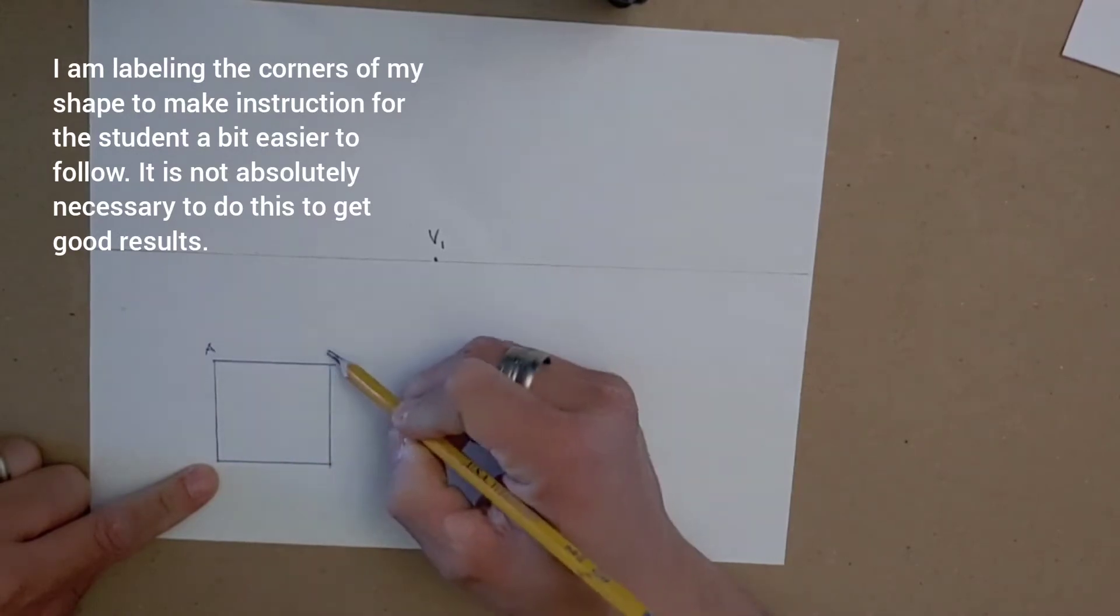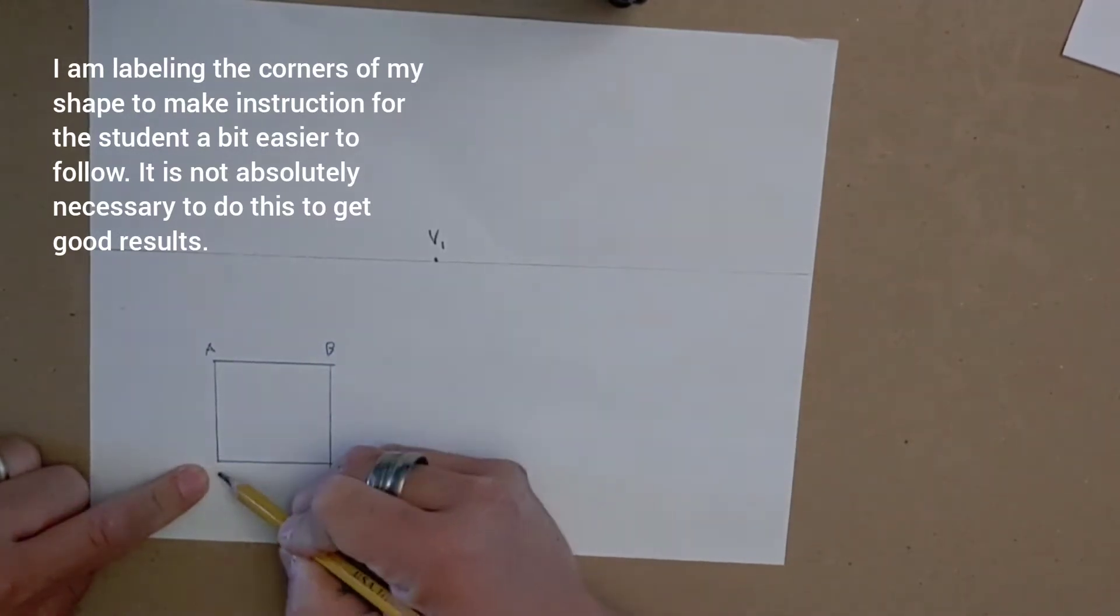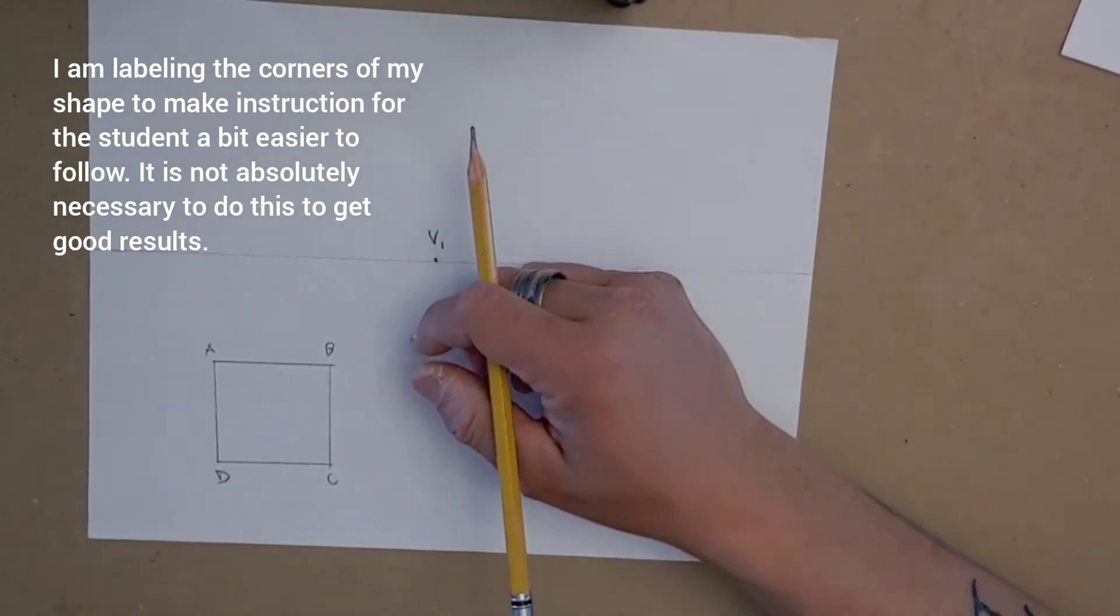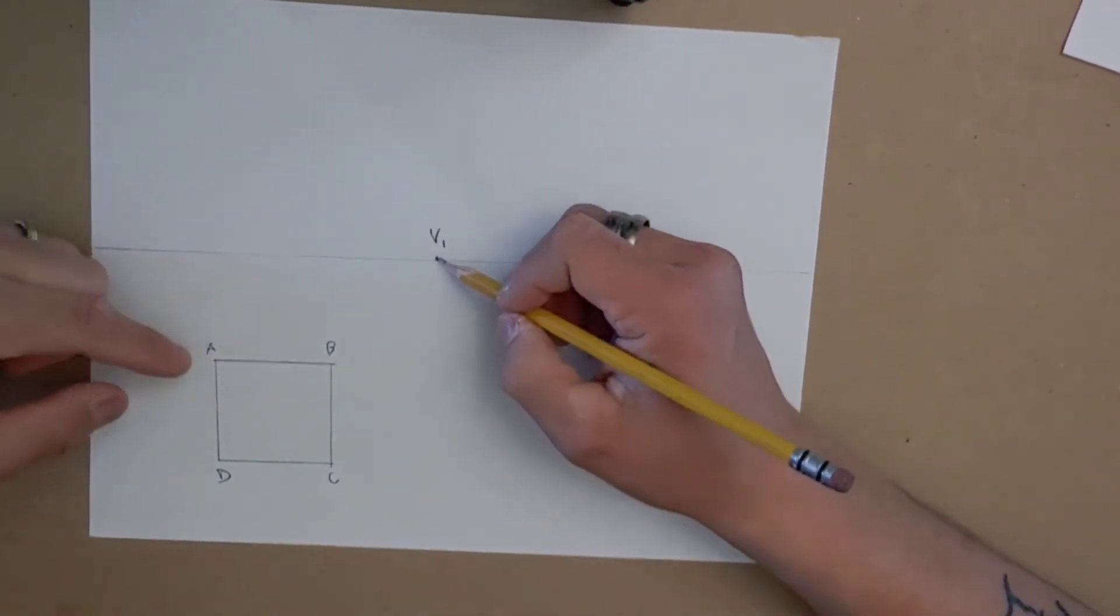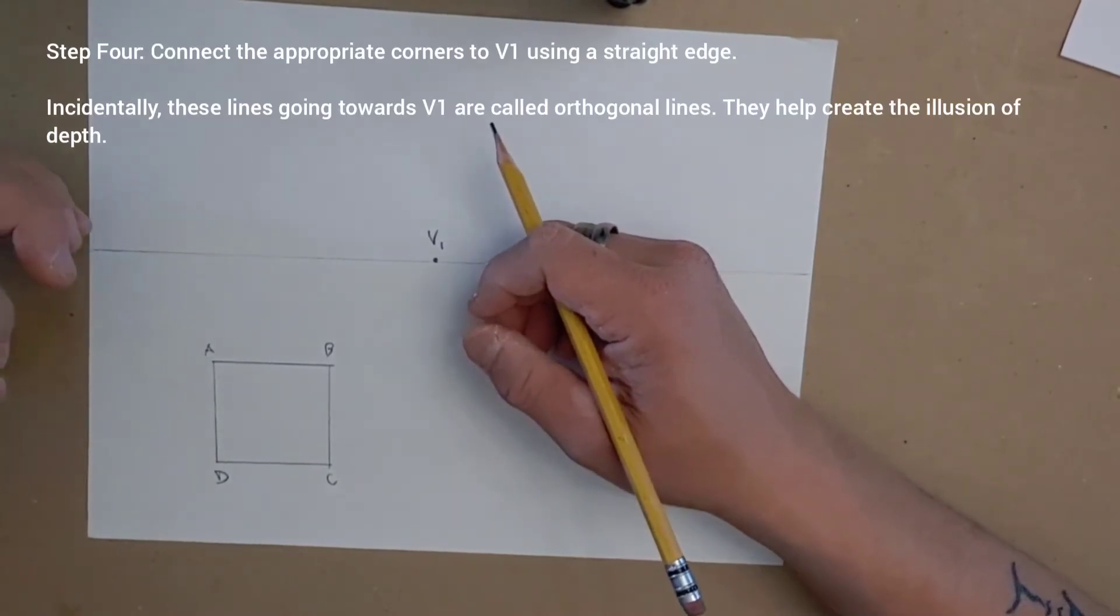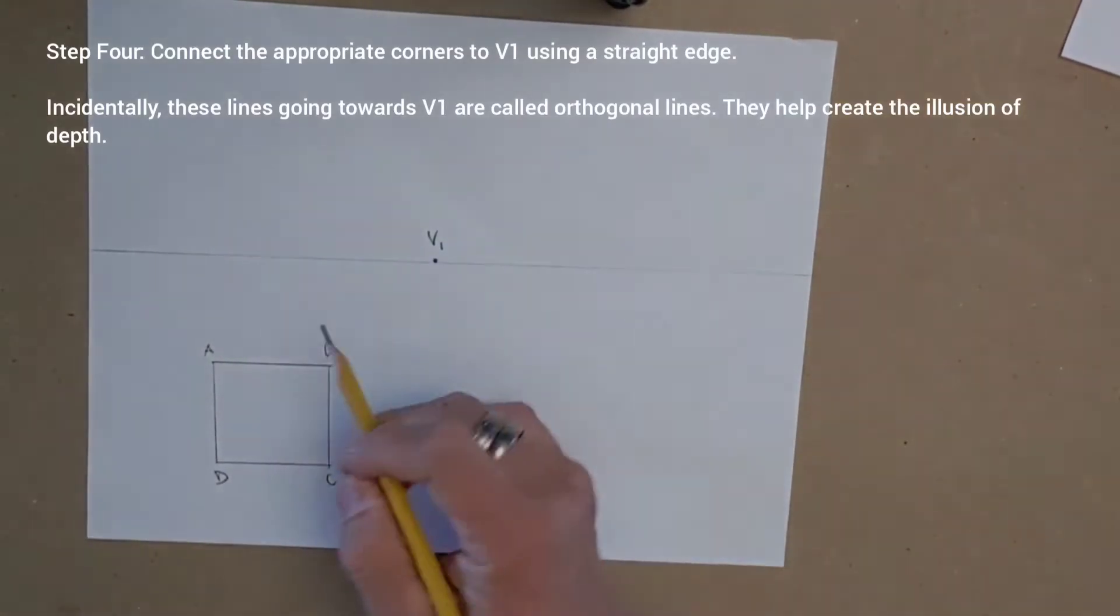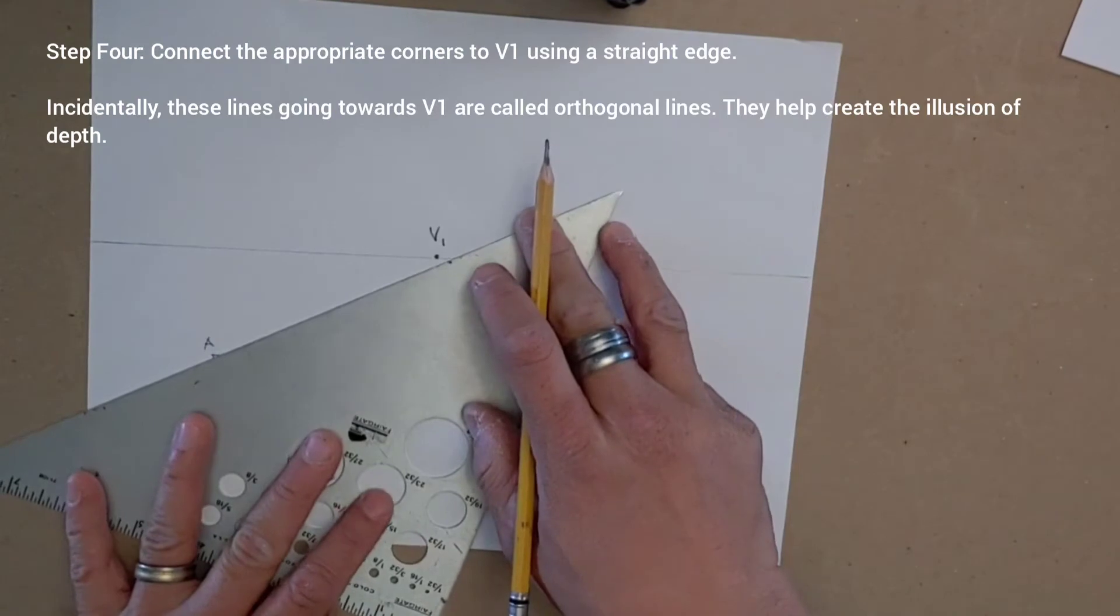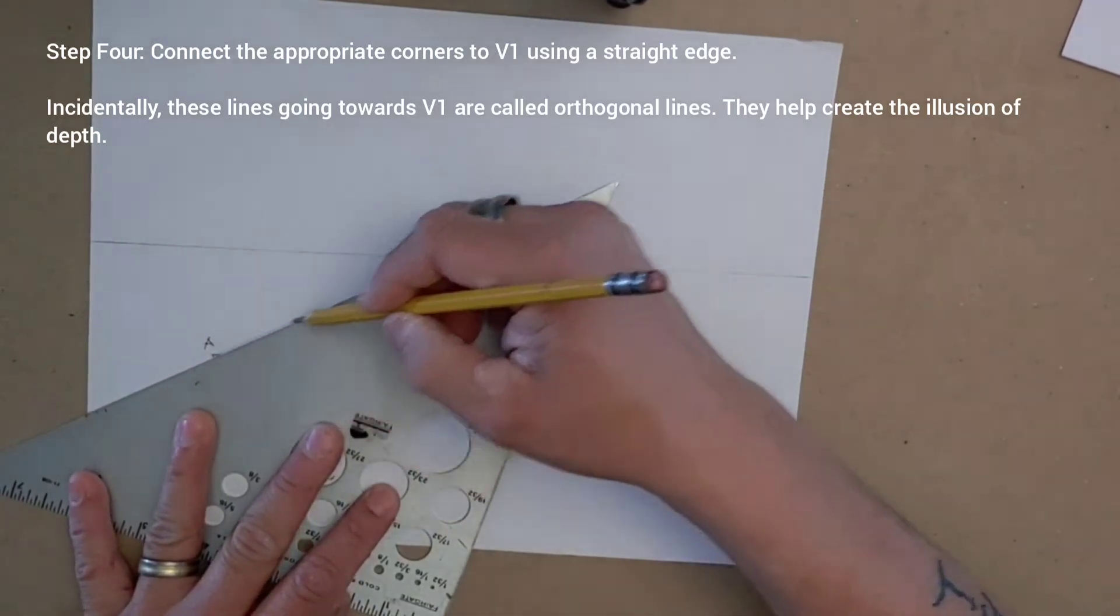And for the sake of this tutorial, I'm going to label those corners A, B, C, and D. And I now have to decide which corners are going to be connecting to V1. I want you to think of this as an elaborate game of connect the dots combined with follow the leader. If I try to figure out if A goes to V1, nothing is blocking that path between A and V1. So I'm going to draw that line over to V1 carefully and lightly with my pencil.